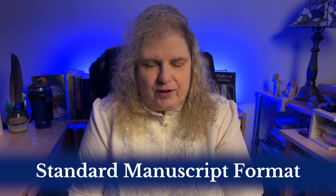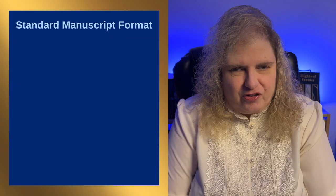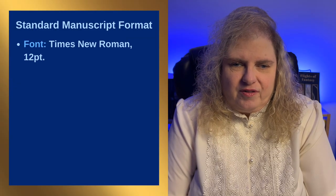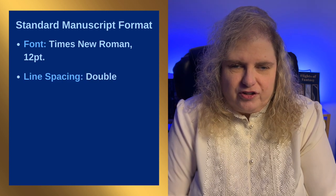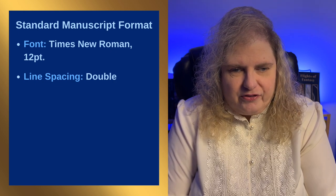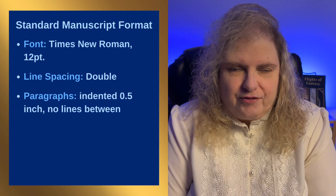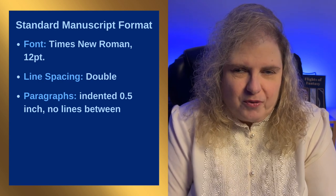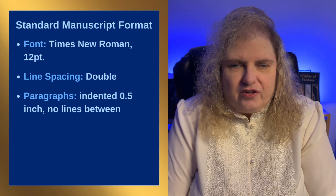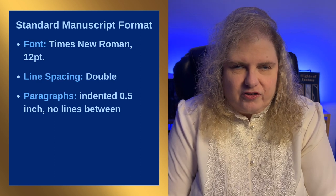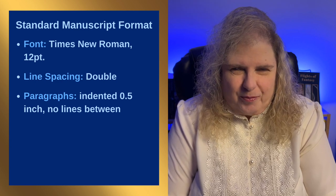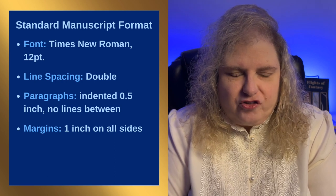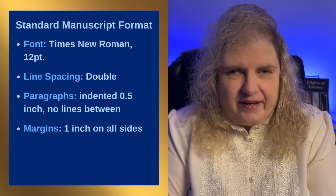What does the publishing industry recommend in terms of formatting? The font should be Times New Roman at 12 point. For line spacing, use double spacing and make certain you don't have space before or after paragraphs. If you're writing a novel, memoir, or short story, the first line of every paragraph should be indented a half inch. Margins should be set to one inch on all sides — left, right, top, and bottom.